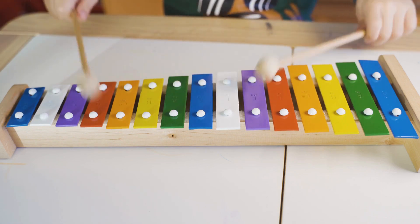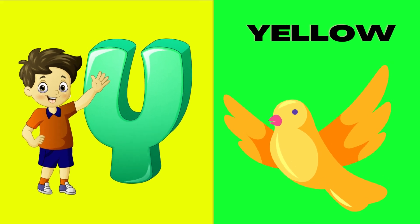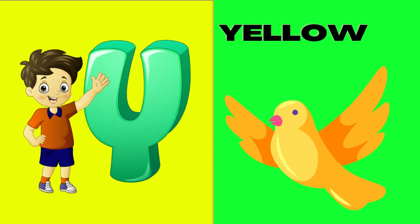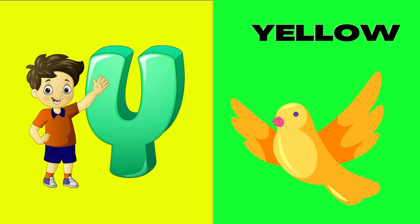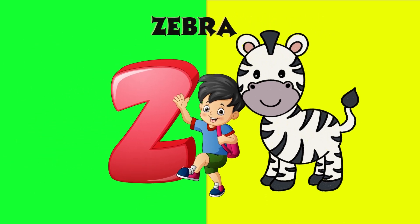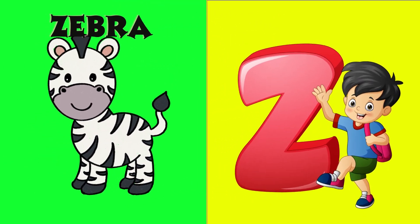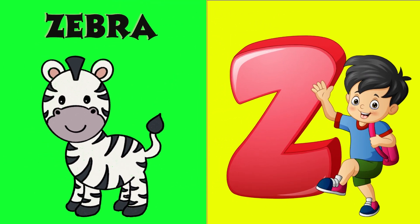Y is for yellow, y-y-yellow. Z is for zebra, z-z-zebra.